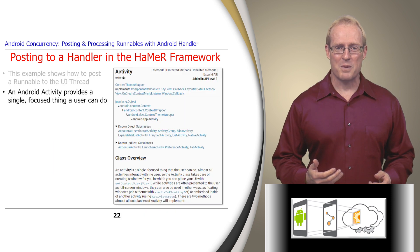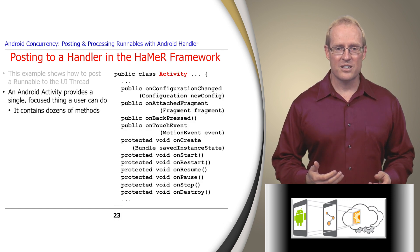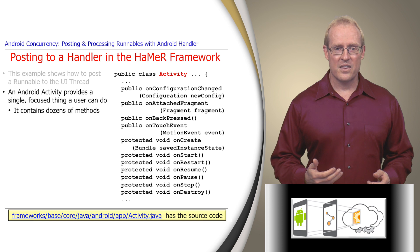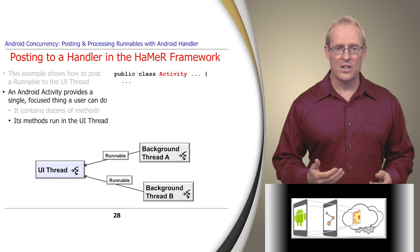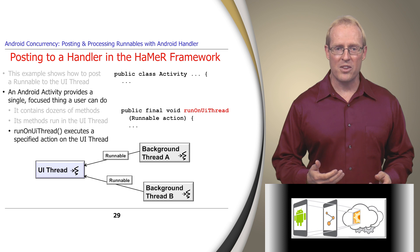This example is based on the Android activity class, which provides a single focused thing that a user can do, as described at this link. The activity class defines dozens of callback hook methods and lifecycle methods, as shown at this path name. These methods perform their computation in the user interface thread. To allow background threads to execute actions in the user interface thread, the activity class defines a runOnUiThread method. An action passed to this method must be implemented as a runnable command.